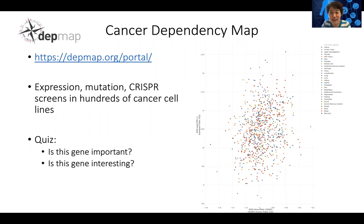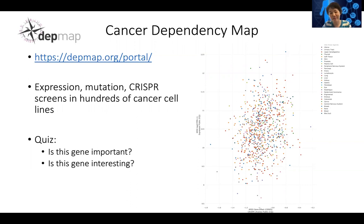But is this gene interesting, at least in a cancer setting? Not as much, because it's what we call panlethal. This is actually a ribosomal gene. In every normal cell, if you knock out a ribosomal gene like RPS5, the cell will die. So it's not a good cancer target.